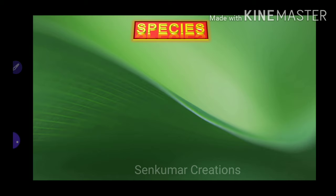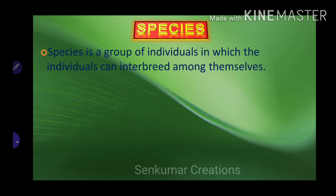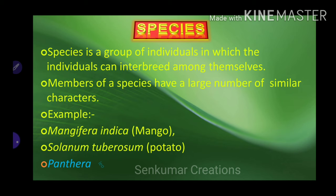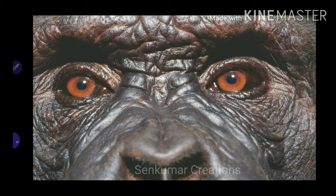Species is a group of individuals in which the individuals can interbreed among themselves. Members of a species have a large number of similar characters. Examples: Mangifera indica is mango, Solanum tuberosum is potato, and Panthera leo is lion.